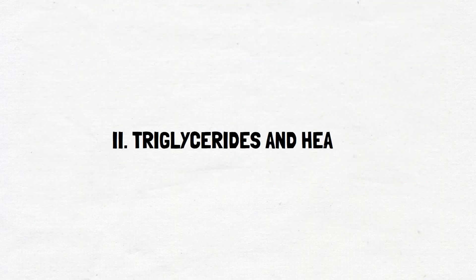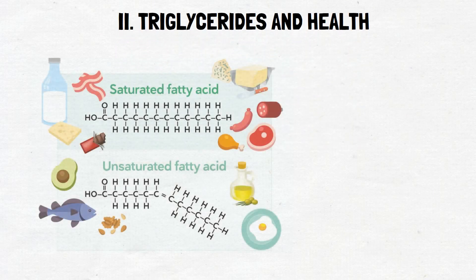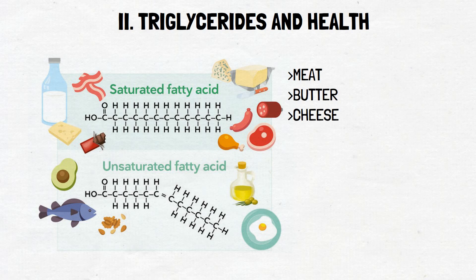Triglycerides and health. When the body has an excess of triglycerides, they are stored in adipose tissue, which can contribute to weight gain and obesity. High levels of triglycerides in the blood are also associated with an increased risk of cardiovascular disease, including heart attacks and strokes. A key factor in distinguishing types of fats is their level of saturation, which refers to how many hydrogen atoms surround each carbon. Saturated fats are typically solid at room temperature and are found primarily in animal products such as meat, butter, and cheese. Saturated fats are known to increase levels of LDL, the bad cholesterol in the blood, which can increase the risk of heart disease.